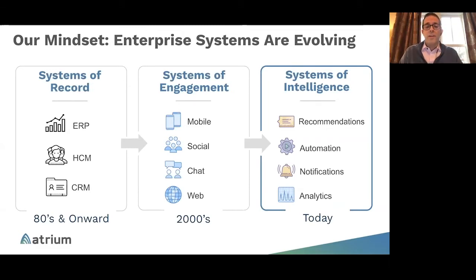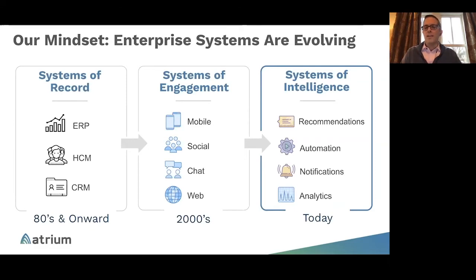There was a big shift towards systems of engagement in the 2000s — Salesforce being one of the leaders — really being able to access your data anywhere, collaborate, and get it on your mobile device. Now we're seeing another big step forward: systems of intelligence. It's an opportunity to give back to end users things like recommendations, inline analytics, and notifications to make solutions smarter and inform how they prioritize their day and engage with customers.